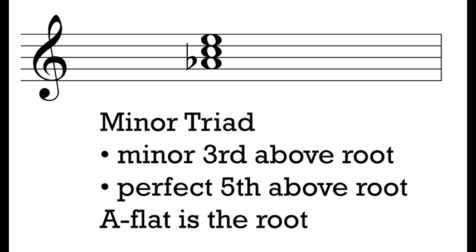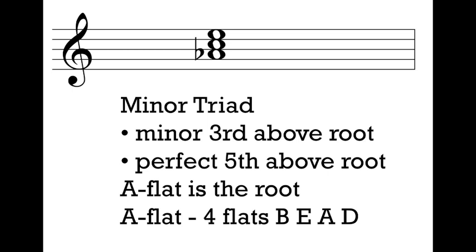To figure out our intervals, we have to think about the major scale of the bottom note. Here we are comparing to Ab, so I'm going to think about Ab major. I check my circle of fifths and see that Ab has four flats: B, E, A, and D. I want a minor third, so I look at Ab to C natural and ask: is the upper note in the major scale of the lower note? Yes — C natural is in the Ab major scale, so this is a major third. But I want a minor third, so I have to make it a half-step smaller. I put a flat on that C — C flat — making it a half-step smaller.